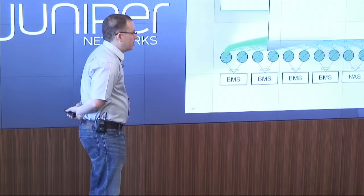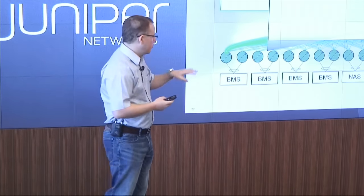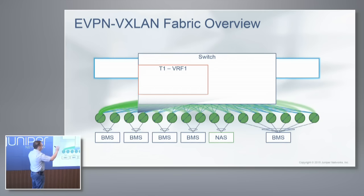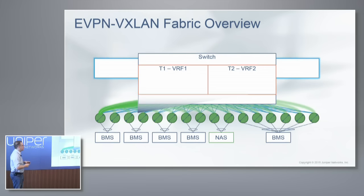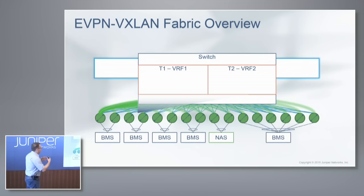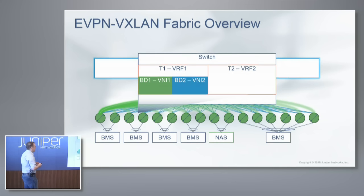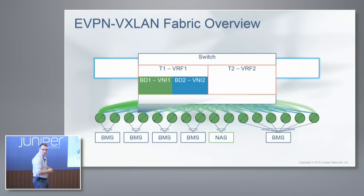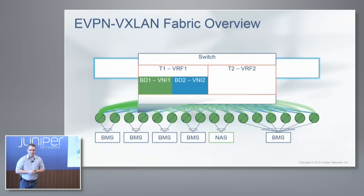The next piece is tenant separation. If you zoom in on one of these switches, whether you want application separation or tenant separation, it's the same fundamental tools. We carve out VRFs — T1 for tenant 1, T2 for tenant 2 — with both a Layer 3 VRF and a Layer 2 VRF. We carve out bridge domains or VLANs, give them a VNI that ties back to the VXLAN identifier, and map that to a VLAN ID. That way we make the mapping from Ethernet to VXLAN through this mapping of IDs, enabling translation between the two for migrations.